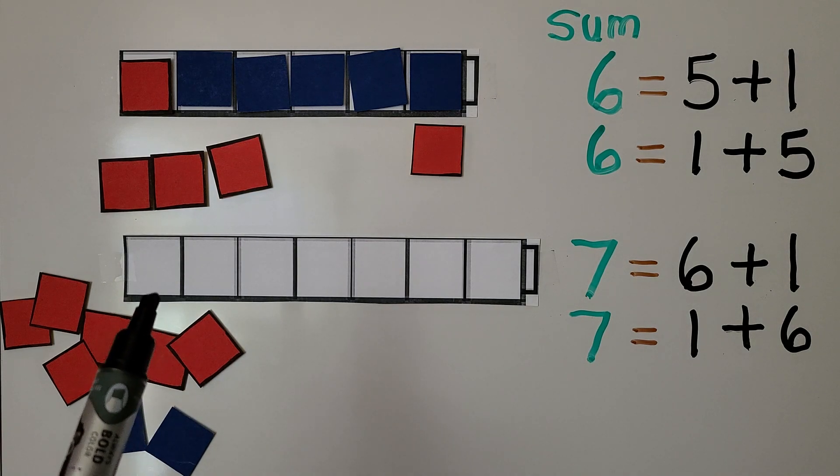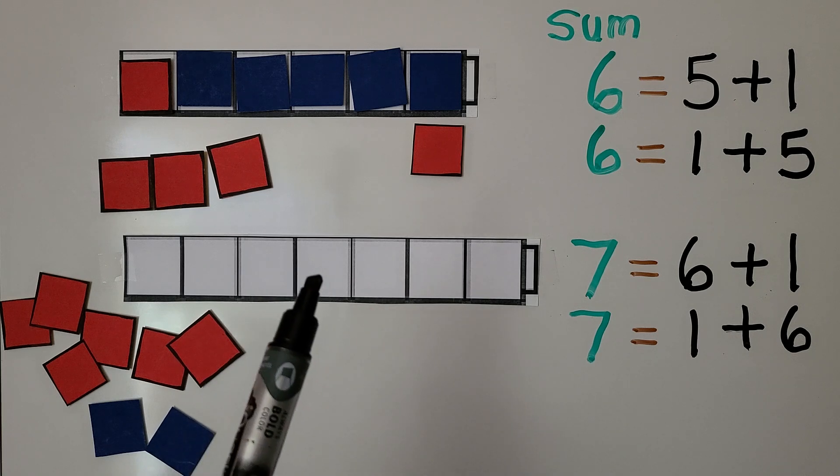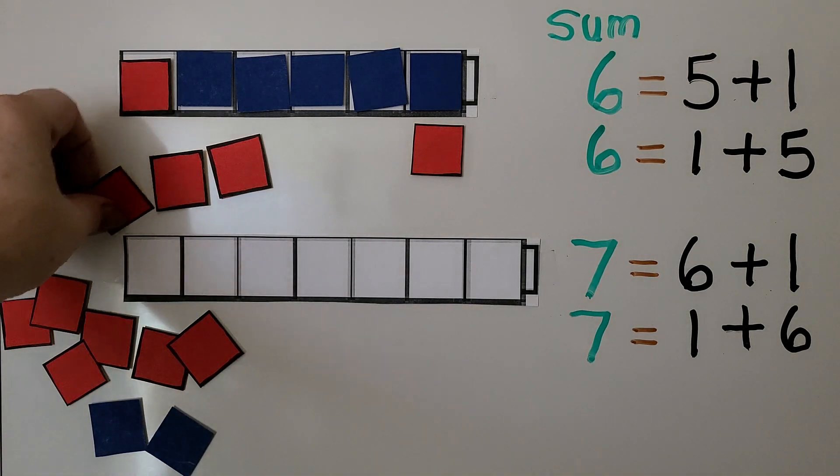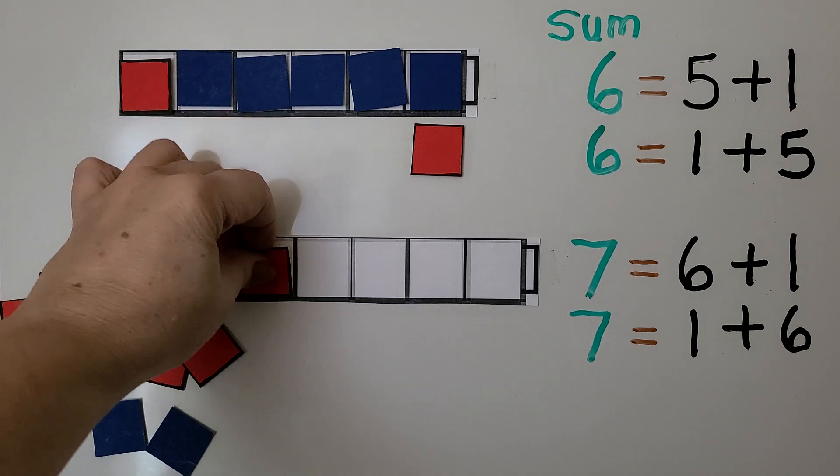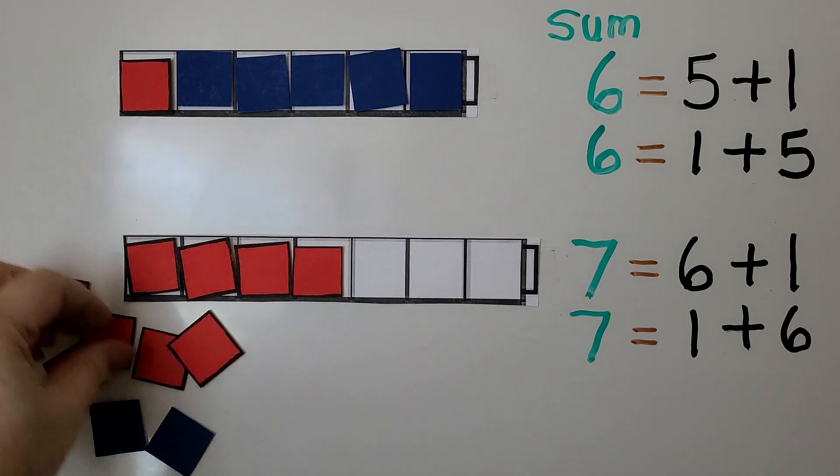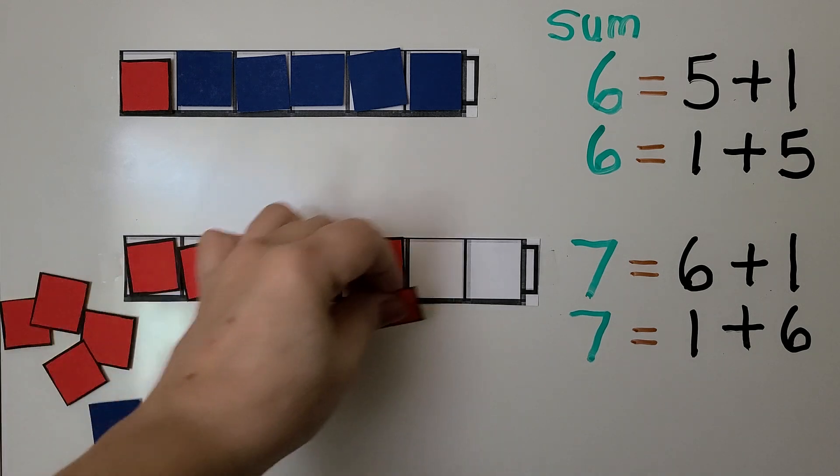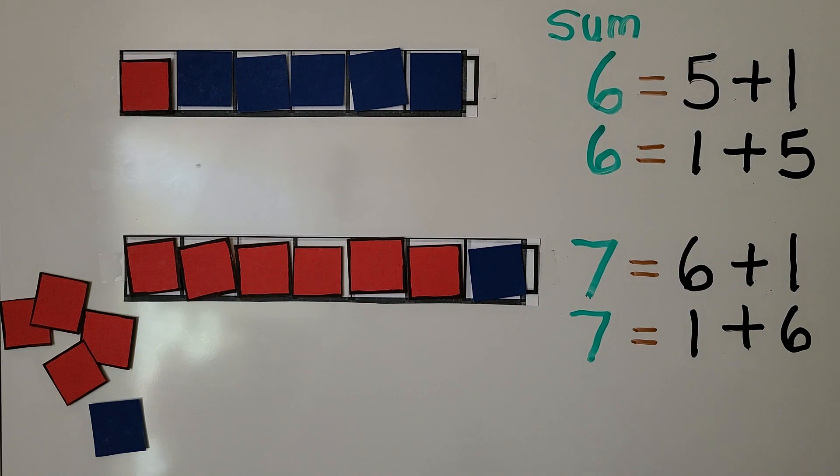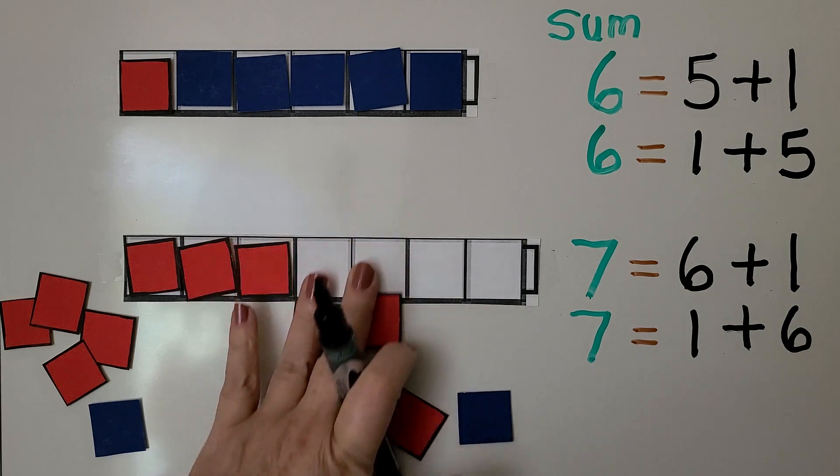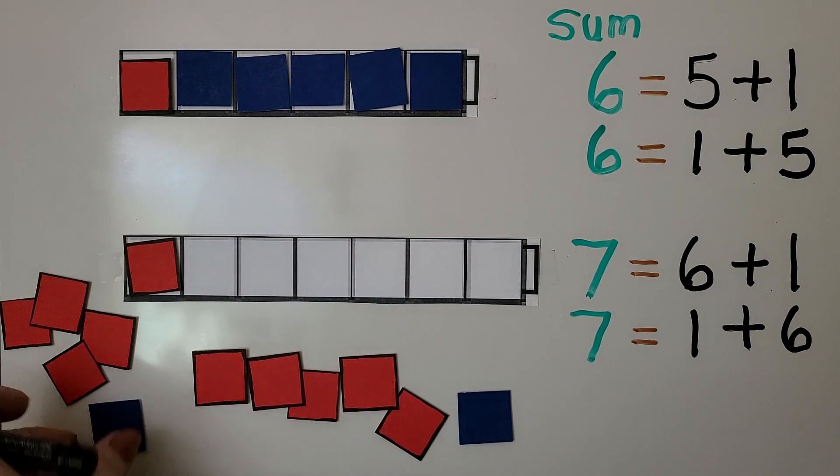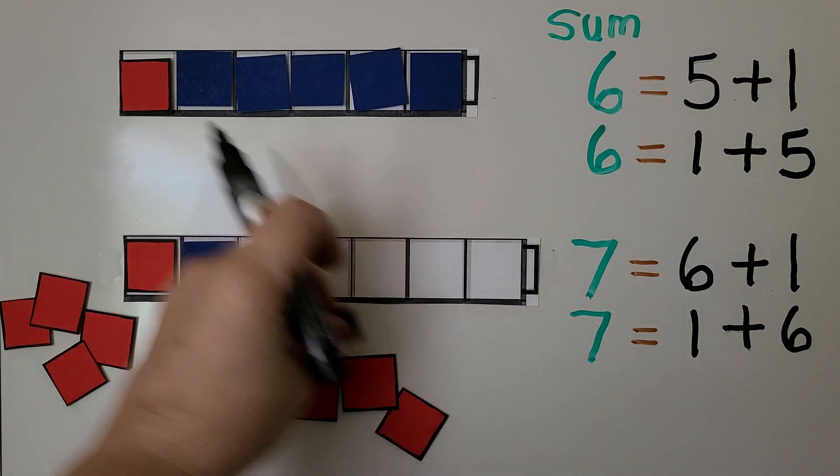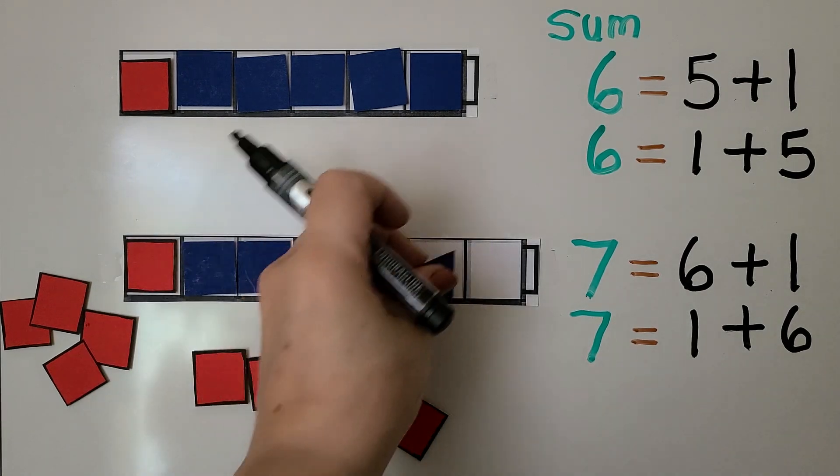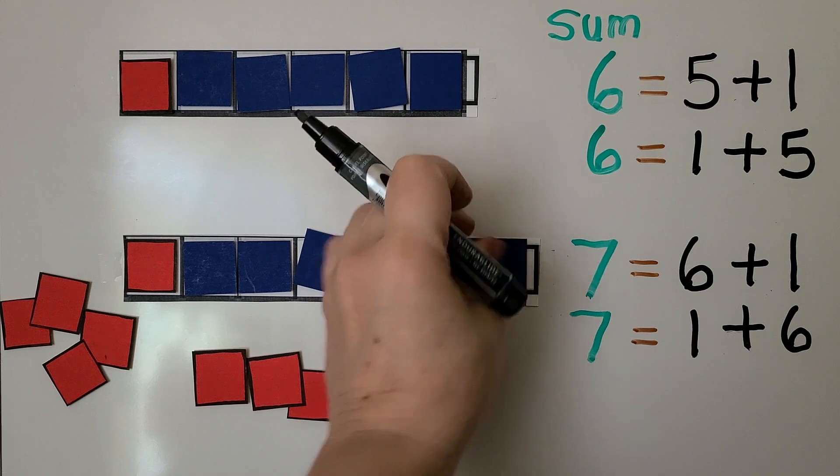Here we have a cube train with 7 cubes: 1, 2, 3, 4, 5, 6, 7. We can show 7 as 1, 2, 3, 4, 5, 6 red ones and 1 blue one. Or we can show this as 1 red one and 1, 2, 3, 4, 5, 6 blue ones.